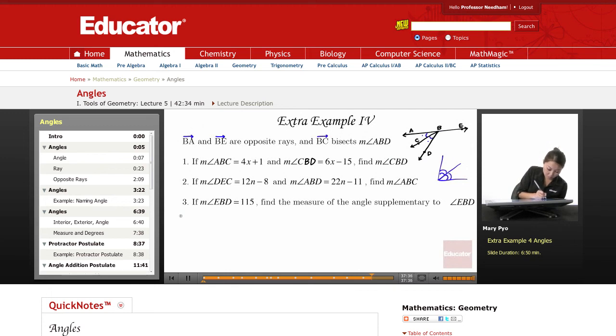So let me just solve it down here. So 4X plus 1 is equal to 6X minus 15. I need to solve for X, so if I subtract the 6X over, I get negative. Let me just write out the answer. Negative 2X, subtract the 1, and I get negative 16, so X equals 8.